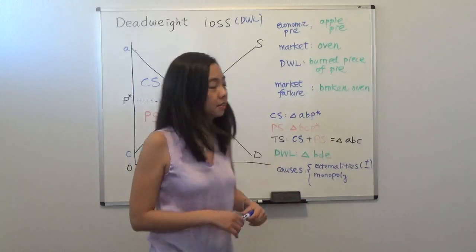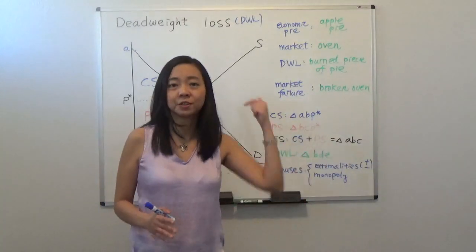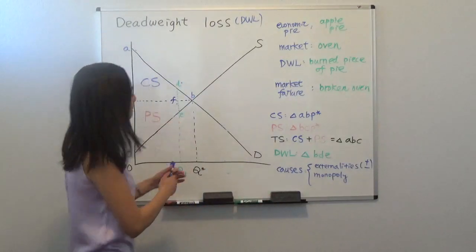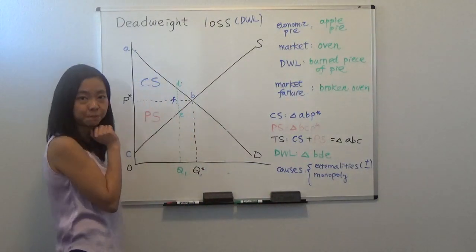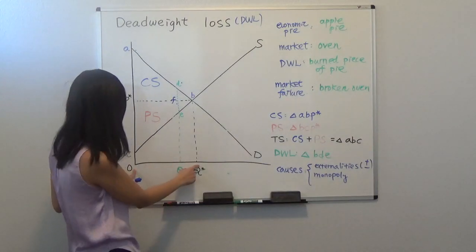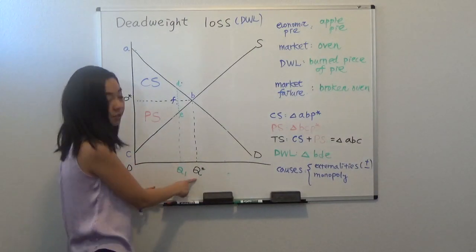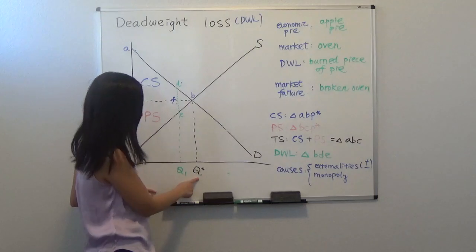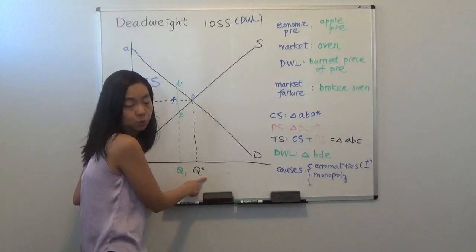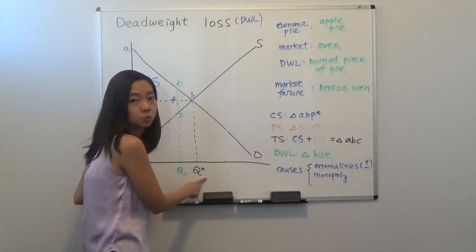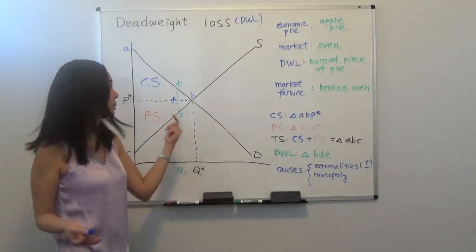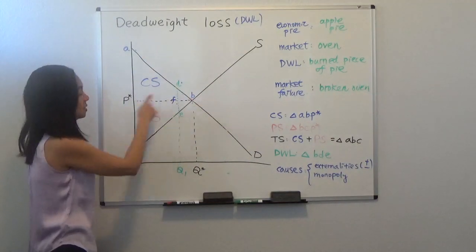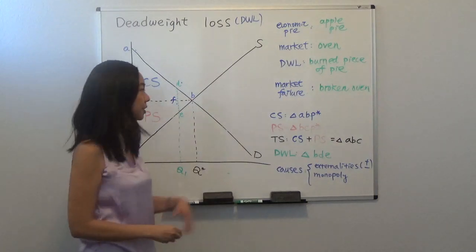Then your consumer surplus, if you remember the previous video, consumer surplus is the area below the demand curve, above the price paid by the buyer. And the base of the triangle is from zero to the equilibrium quantity in the market, which is Q star. That's when your oven functions well, when you don't have market failure. Then your consumer surplus will be triangle A, B, P star. So that's your consumer surplus.